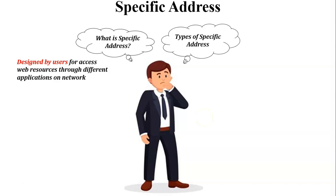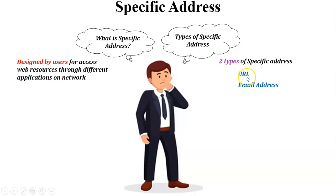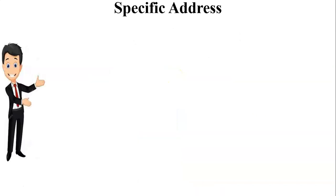How many types of specific address are there? There are two types of specific address. The first one is the URL and the second one is the email address. Here I am discussing both specific addresses one by one.